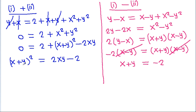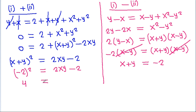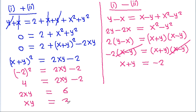Since x plus y is minus 2, substituting into (x plus y) squared equals 2xy minus 2 gives 4 equals 2xy minus 2. So 2xy equals 6, and therefore xy equals 3.